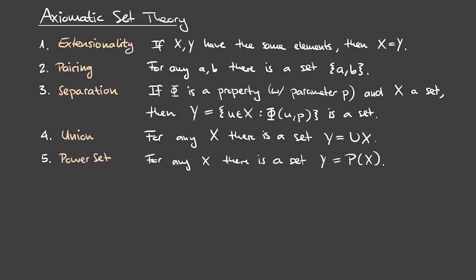Axiom 5 tells us that power sets of sets exist. For any set x, there is a set y — namely the power set of x — which is the set of all subsets of x. Axioms 4 and 5 together are necessary because separation no longer allows us to construct unions and power sets.